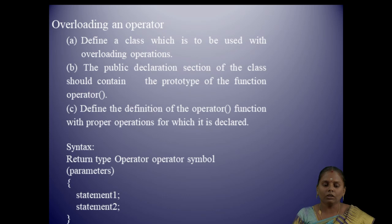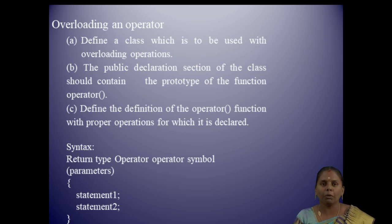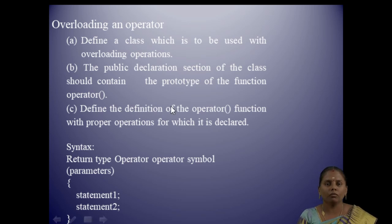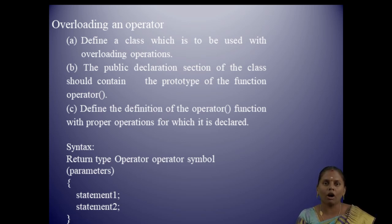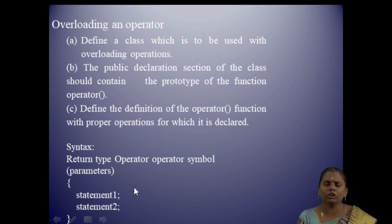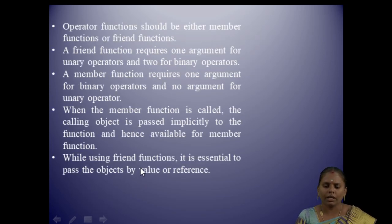To perform operator overloading in C++, first we have to define a class where you will perform operator overloading. Second, in the public declaration scope, we have to declare the operator function. This operator function is going to perform the intended operation. Here is the syntax: we mention the return type, the operator keyword, the operator symbol, followed by the list of parameters. Within the operator function, we mention all statements to perform that particular operation.